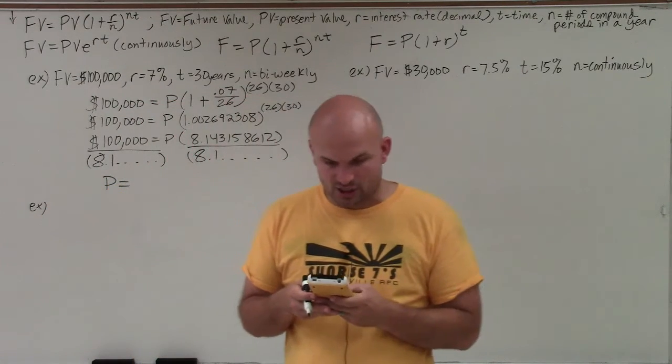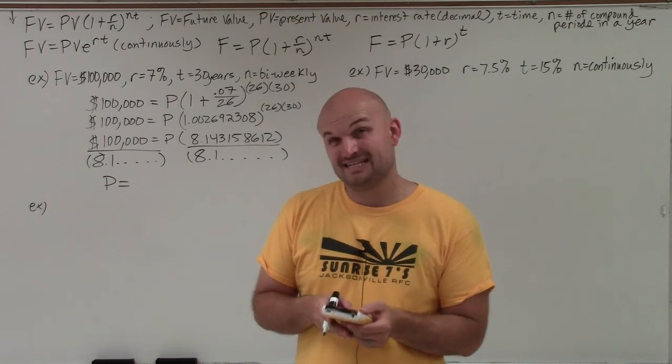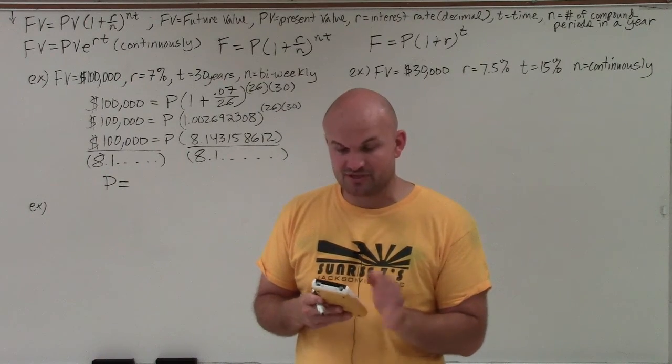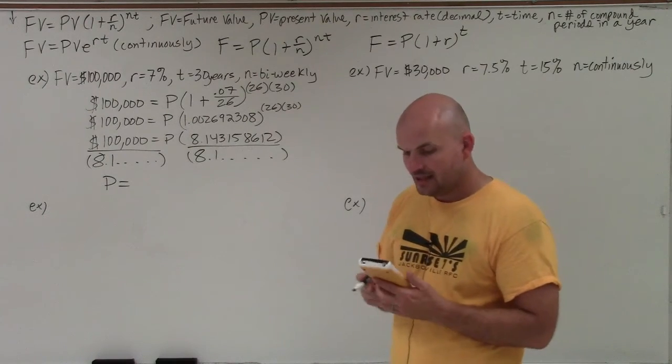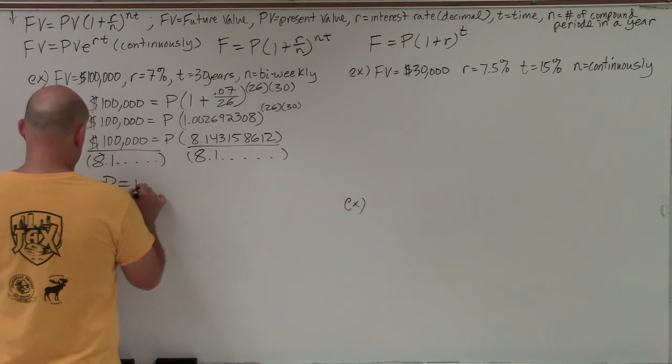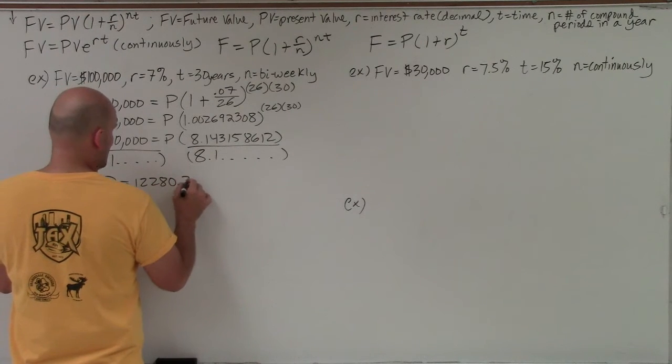So what I'll do in my calculator is I'm going to take 100,000 and divide it by my answer. So I'm just going to type in second answer, which is going to take my previous answer, which was 8.14. And then that's going to give me 12280 rounded to the nearest tenth,